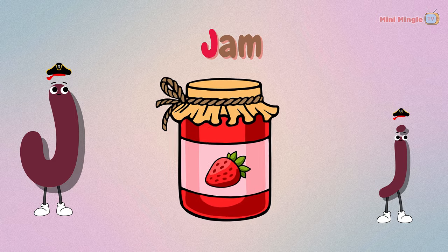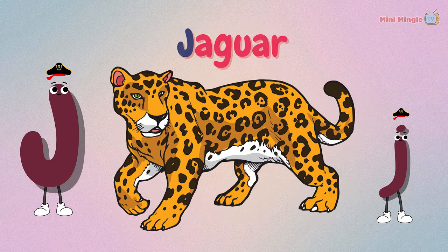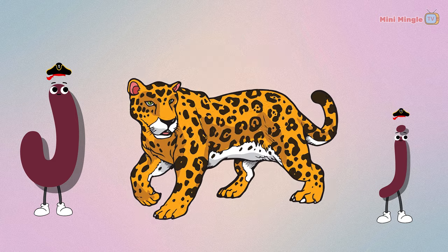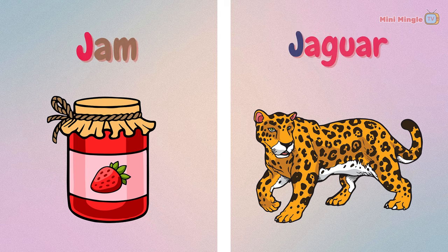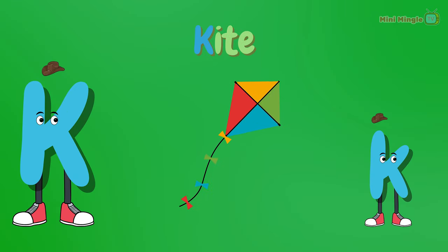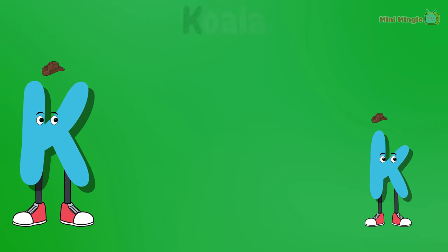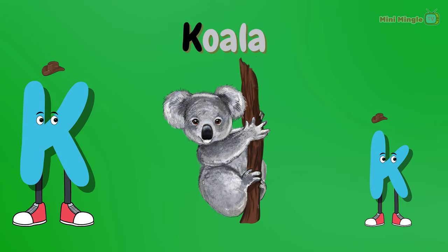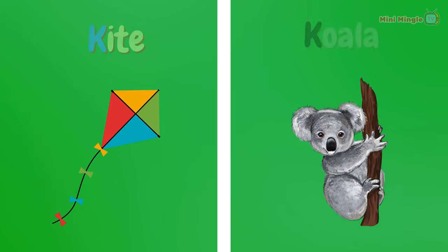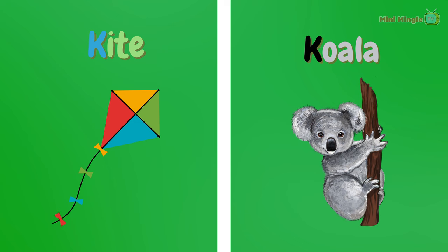J for jam. J for jaguar. Jam and jaguar. K for kite. K for koala. Kite and koala.